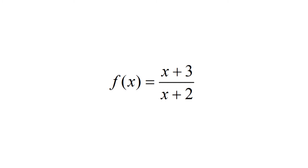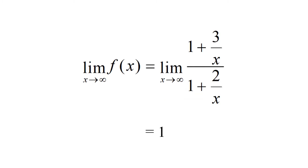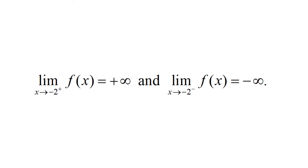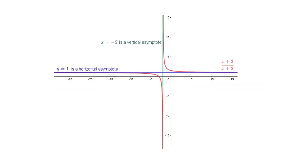As another example, let f(x) = (x+3)/(x+2). We have lim(x→∞) f(x) = lim(x→∞) (1 + 3/x)/(1 + 2/x) = 1. Thus y = 1 is a horizontal asymptote. Further, lim(x→−2⁺) f(x) = +∞ and lim(x→−2⁻) f(x) = −∞. Hence x = −2 is a vertical asymptote. Thus f(x) = (x+3)/(x+2) has a vertical asymptote x = −2 and a horizontal asymptote y = 1.